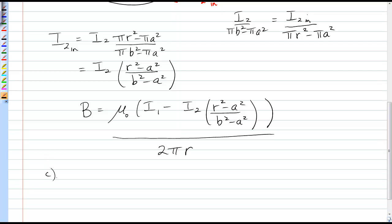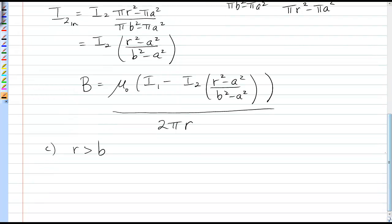Okay now let's go outside the whole coaxial cable. So for r greater than b, we have all of I1 and all of I2, but they are in opposite directions. So I_in in this case will be I1 minus I2. And then we just put that into Ampere's law. So we have mu naught times I1 minus I2 over 2 pi r.